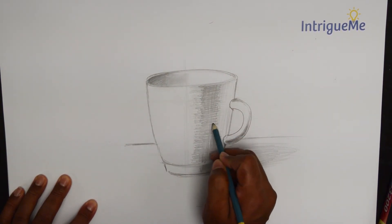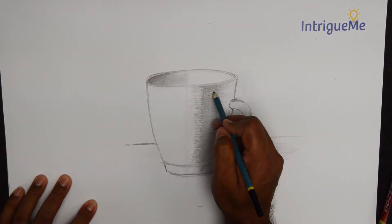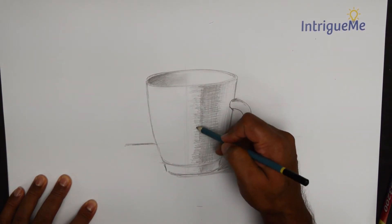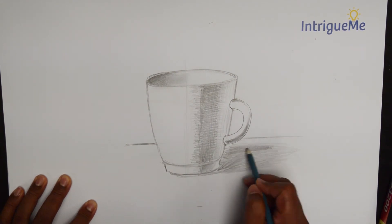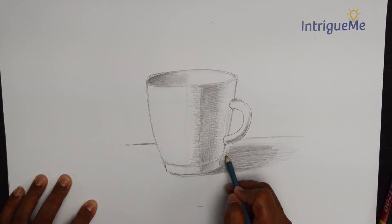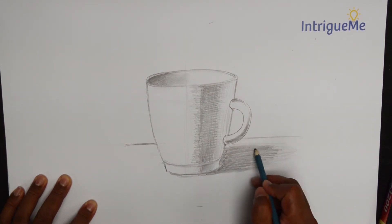I just grabbed a thicker pencil. You could just go with a reinforced stroke or add some pressure. And you will see that it will start to come together quite nicely.